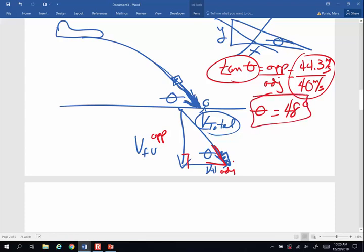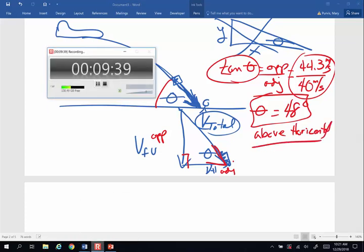Now, how do you say that for clear communication? How I would say that is 48 degrees above horizontal. All right. Hope that helps. And see you next time. Bye-bye.